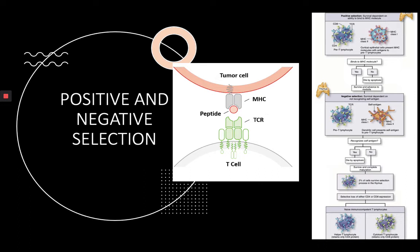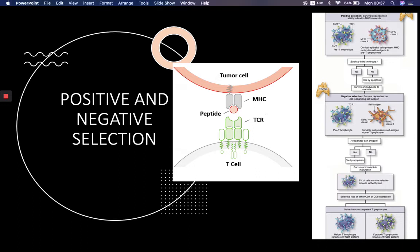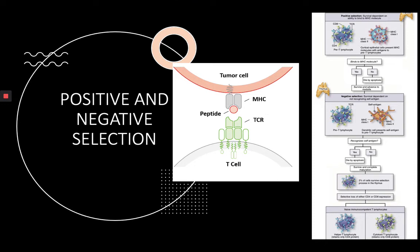In the second stage, negative selection, the T cells are presented with self-antigens. If they recognize and bind very strongly to a self-antigen it means they would attack it — which they shouldn't — so they die by apoptosis. If they don't bind strongly to the self-antigen, they survive and complete their maturation. Only about two percent of T cells go through this selection and survive.